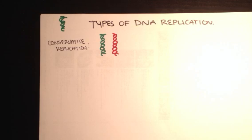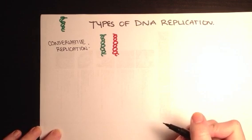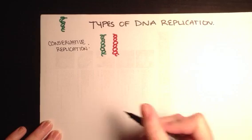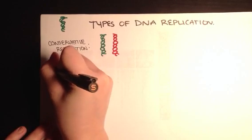The second type of DNA we're going to look at is the most common type, and it's called semi-conservative.